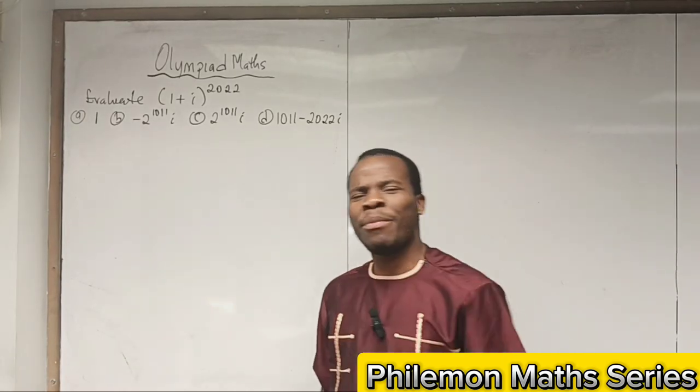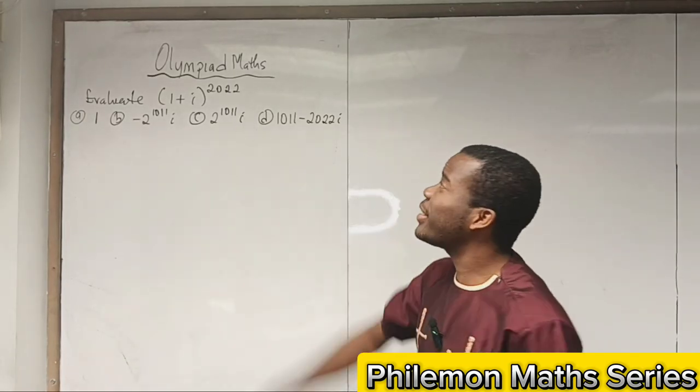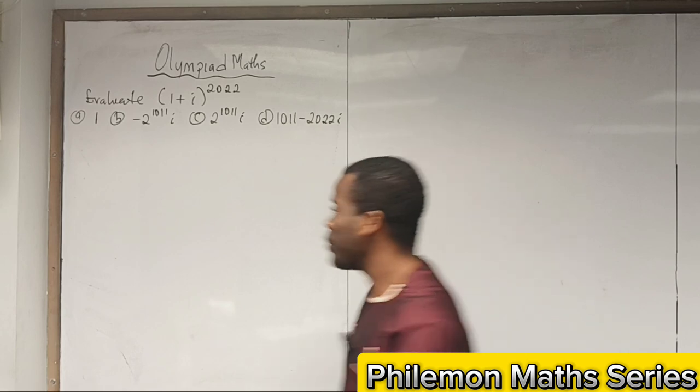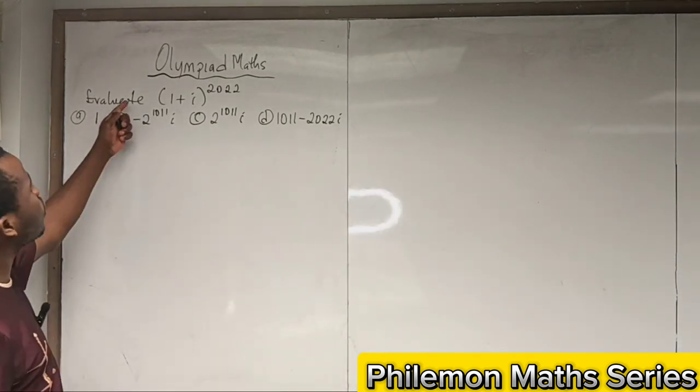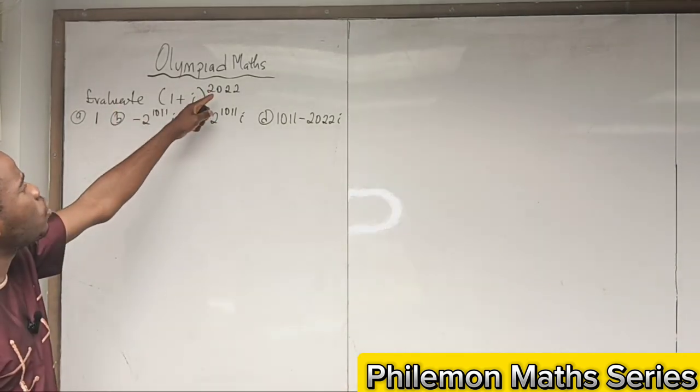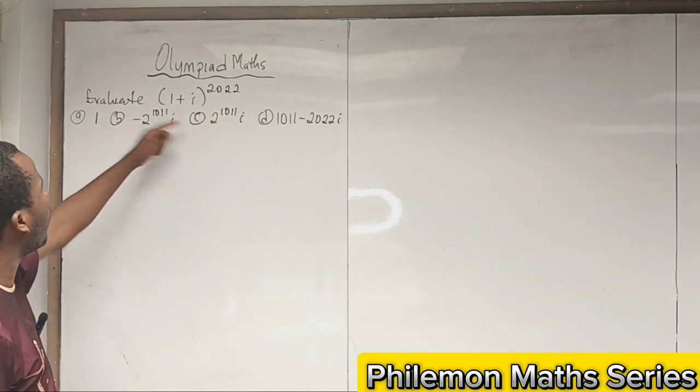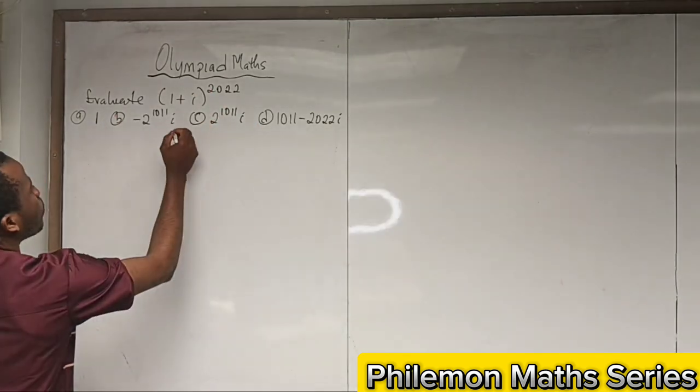Hi friends, welcome to Philemon Maths Series. Let's evaluate this Olympiad math together. We're asked to evaluate (1 + i)^2022 and we're given these options. Let's see.